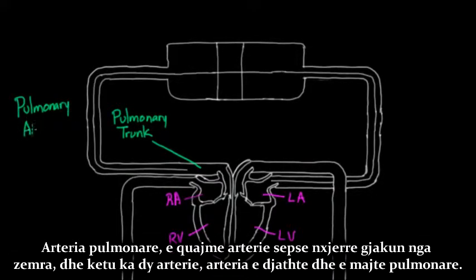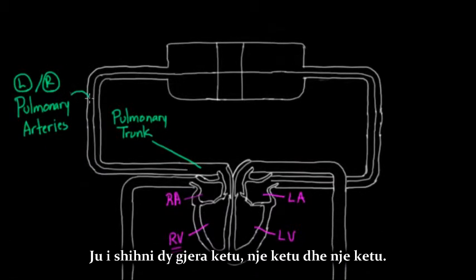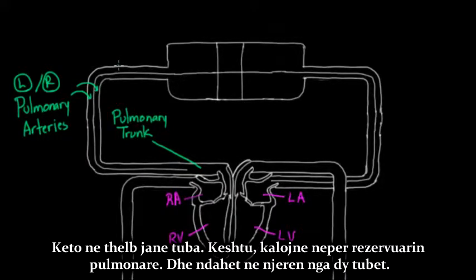I call them arteries because they're going away from the heart. There are two arteries — left and right pulmonary arteries — and that's why you see two things here, one on each side. Those are basically tubes, so blood goes from the pulmonary trunk and splits into one of the two tubes.